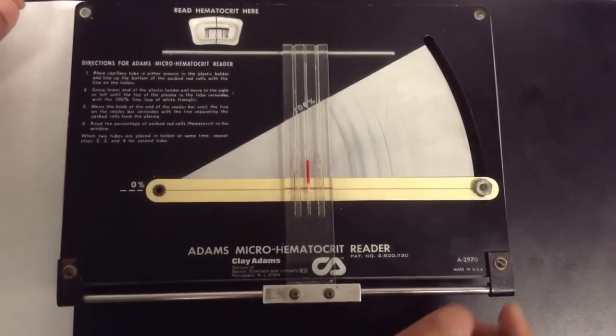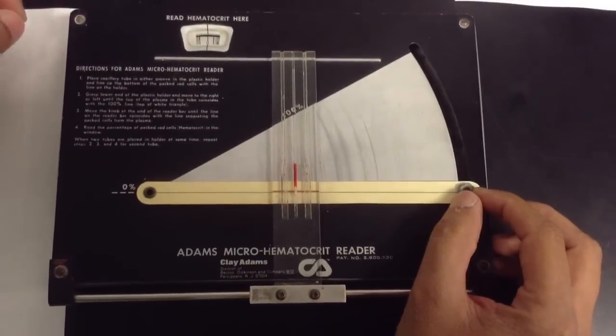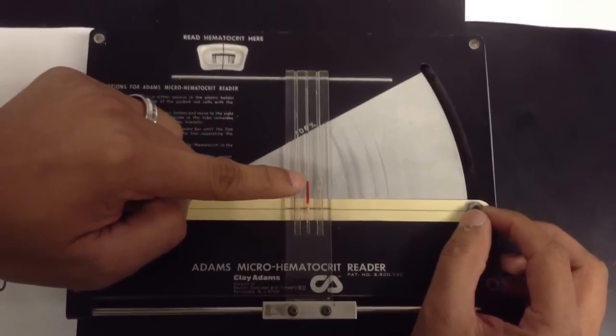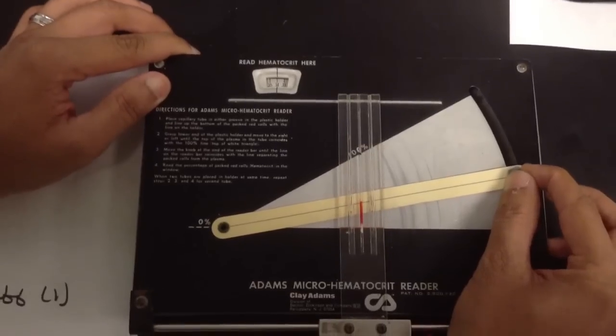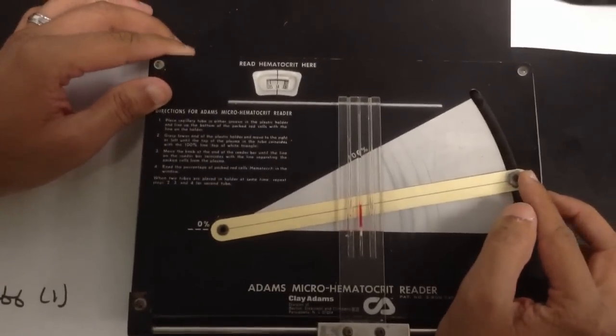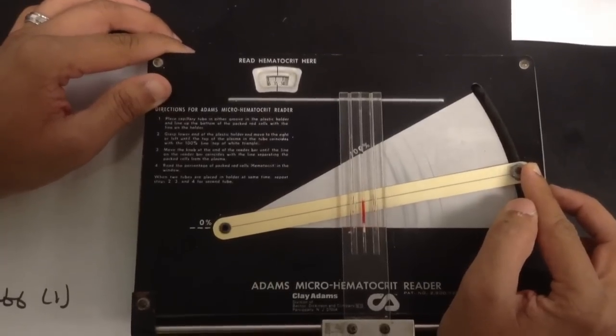So it touched the 100% line, you take this level right here and move it towards the hematocrit level or the blood level. So it's at the hematocrit right here. And you see the measurement perfectly.